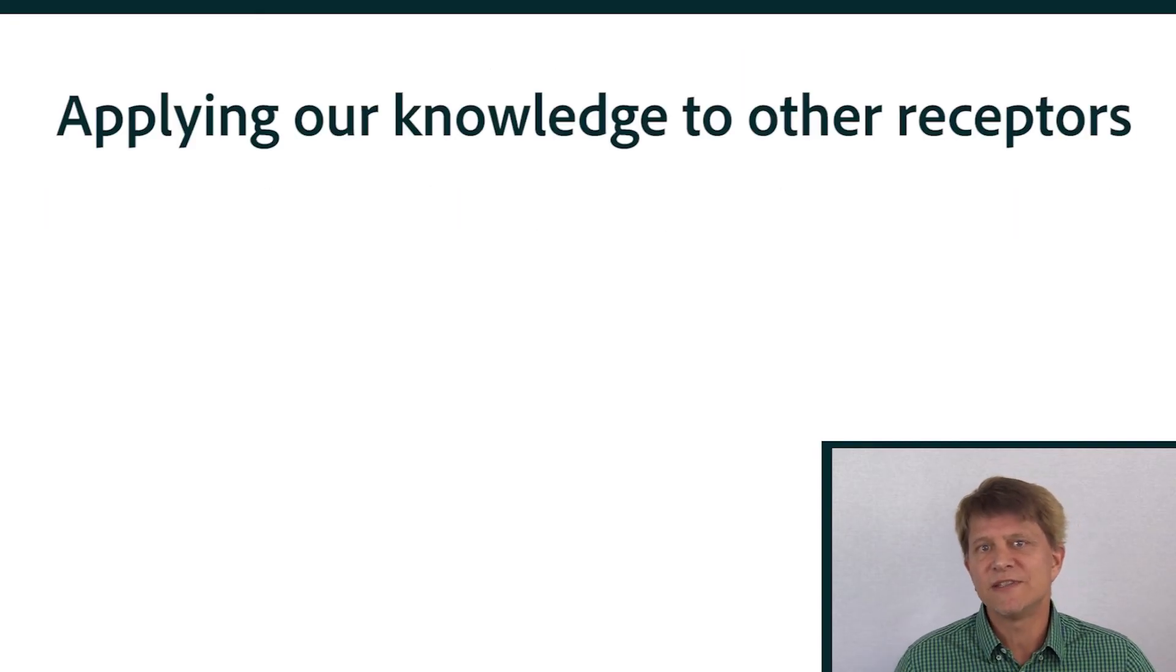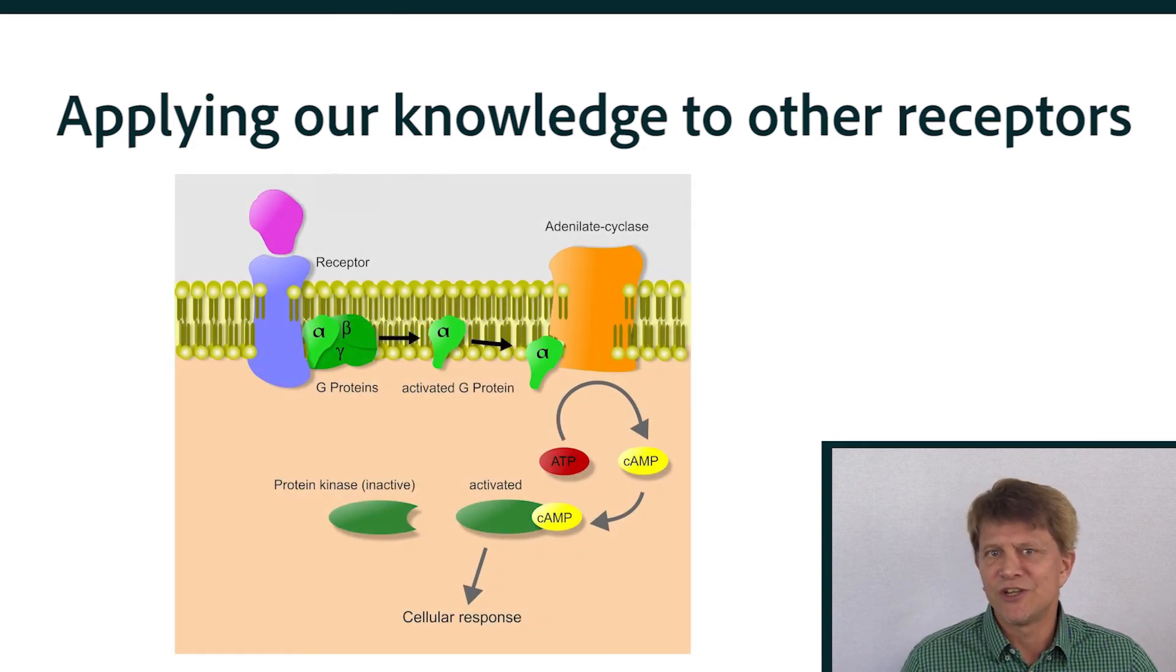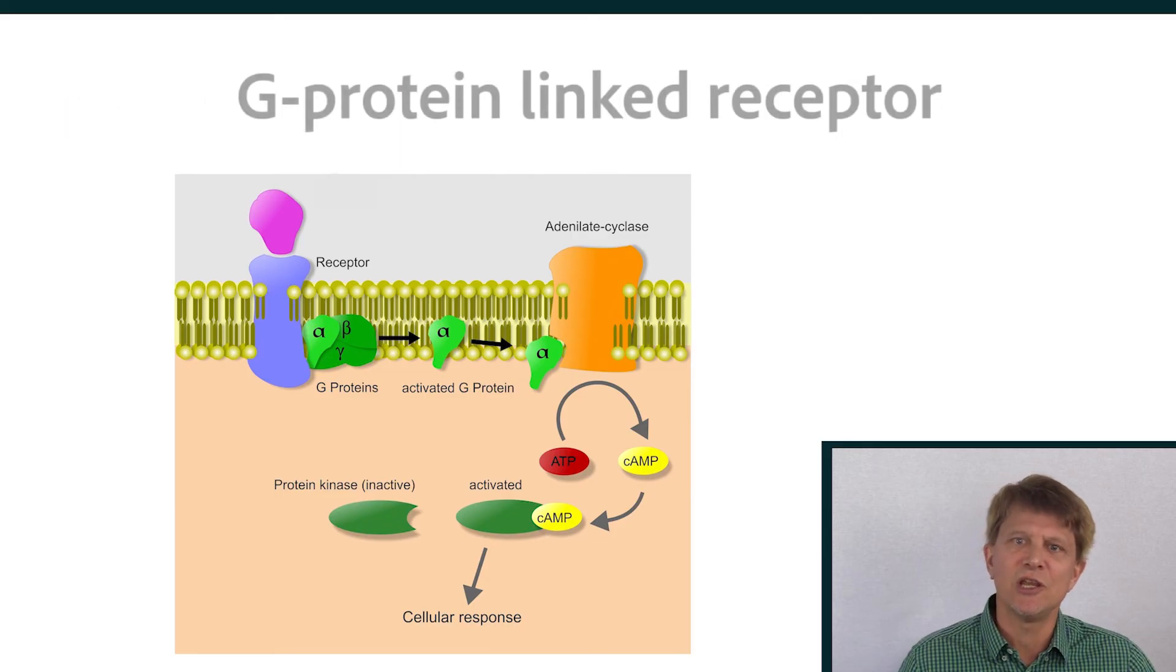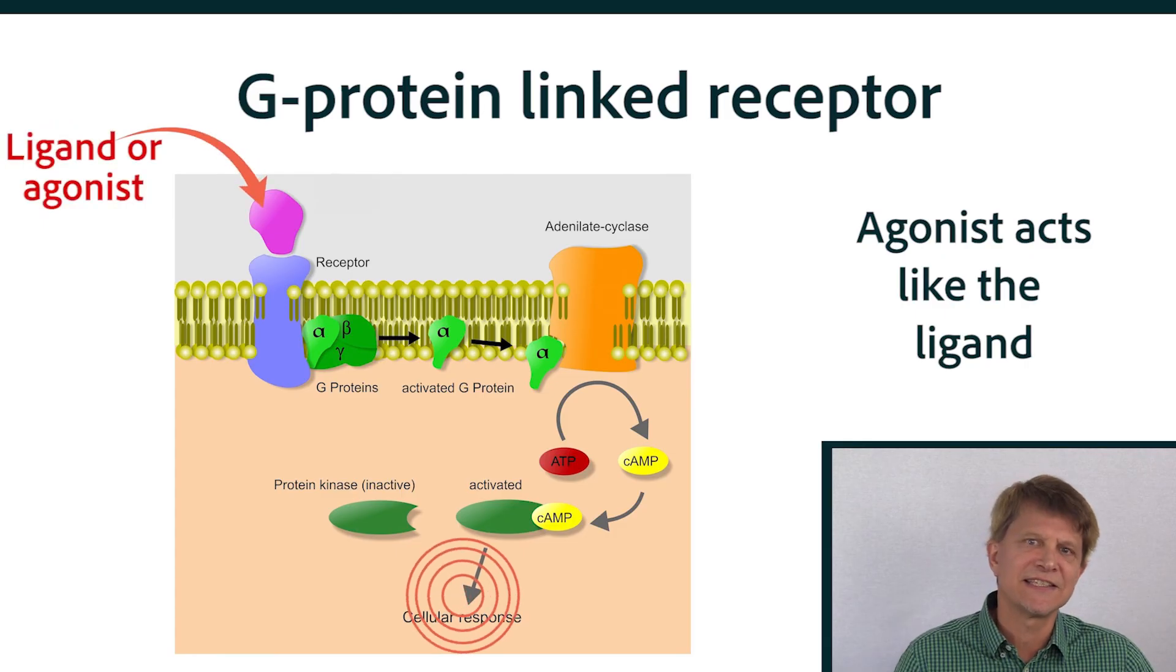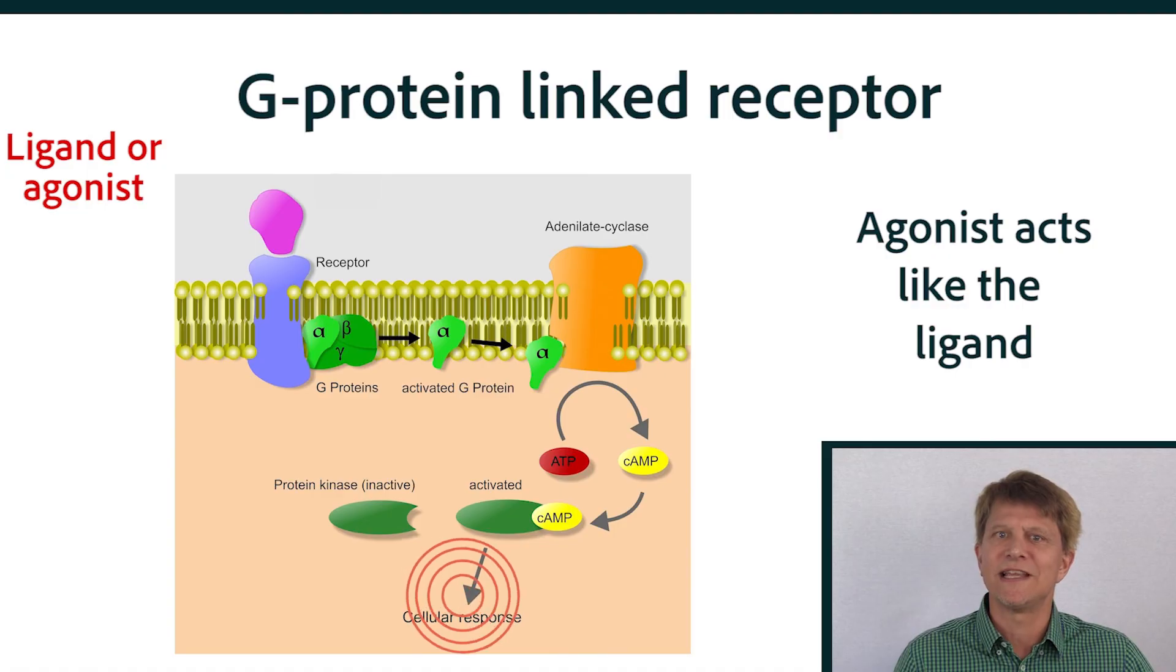We've just used the simplest cellular receptor to understand what our medications can do at cellular receptors and to further our understanding of molecular binding of drugs. Quickly applying our knowledge to the most common and complex cellular receptor, the G-protein-linked receptor. An agonist is a drug that acts in the same way as the natural ligand, ultimately resulting in the same cellular response.